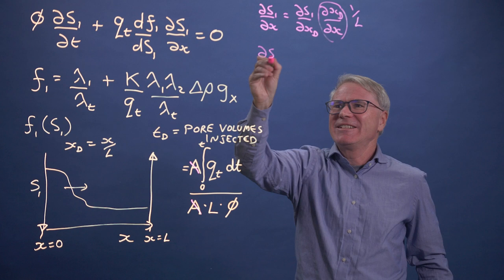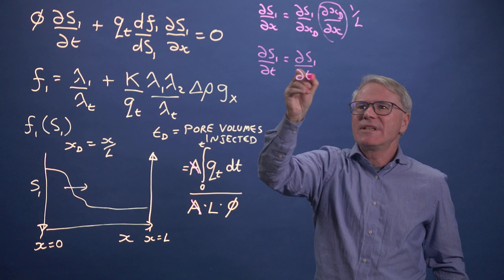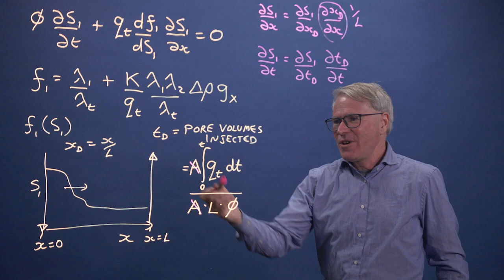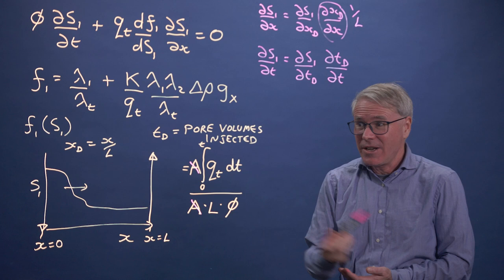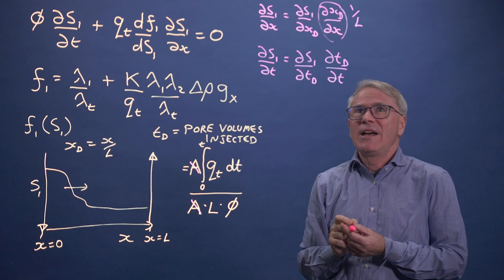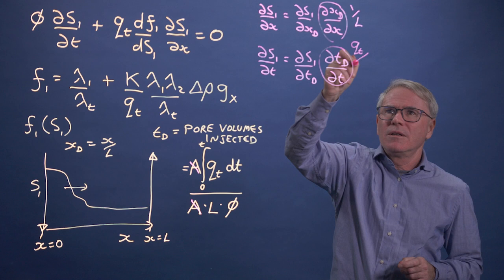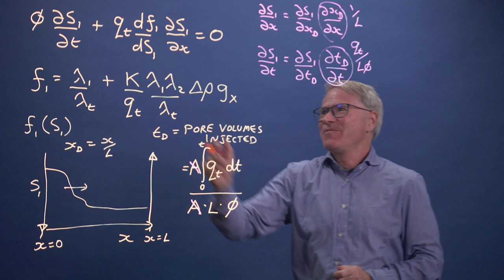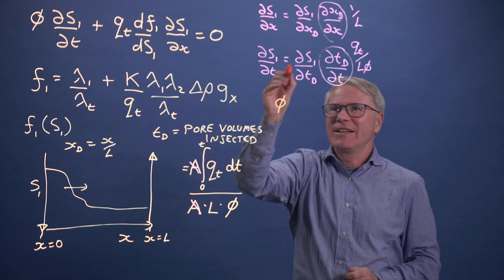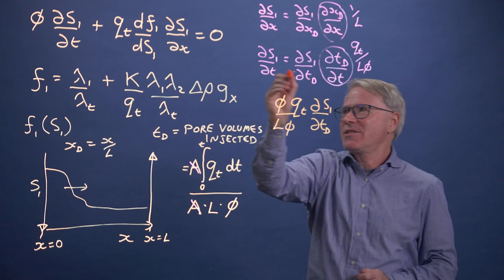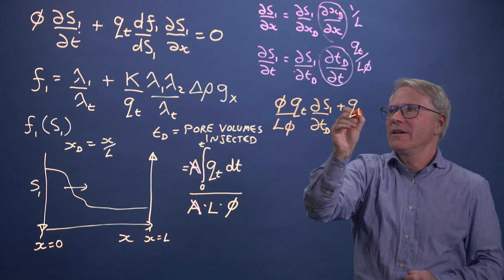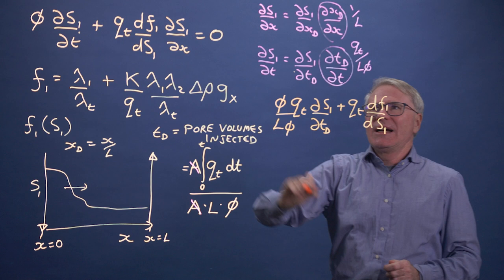Then we've got dS by dT, which is dS1 by dTD times dTD by dT. The key thing here is when I differentiate that with respect to time, I just got the Qt. Qt doesn't have to be a constant in time, it can be variable, but the derivative is just Qt divided by L phi. So we've got phi dS1 by dT, which is phi times Qt over L phi times dS1 by dTD. Then we have the Qt dF1 by dS1 times dS1 by dX, and there's a 1 over L term here.